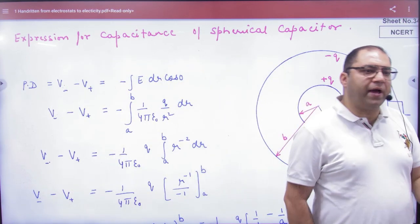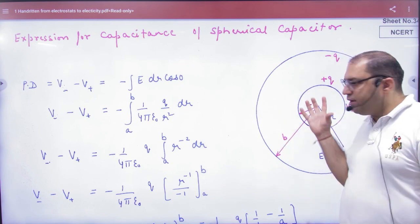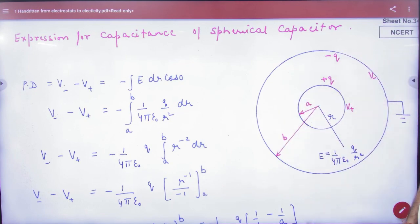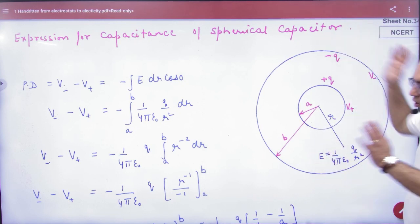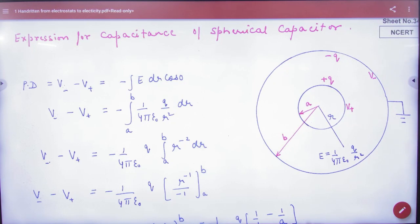I have a parallel plate capacitor, so what does it look like? Take a shell - there is a Q charge, and then take another shell with minus Q charge. The inner radius is A and the outside radius is B.